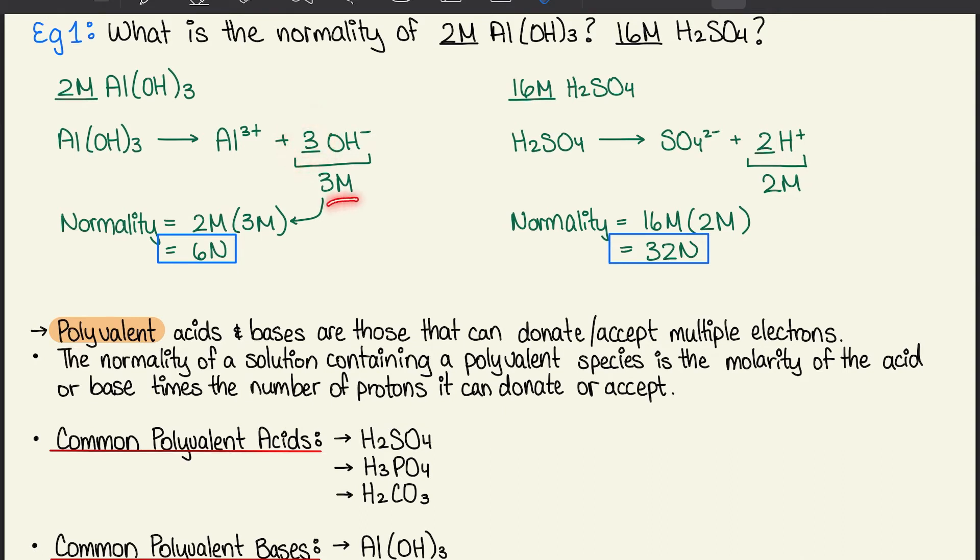Normality equals 2 moles times the 3 moles, because that's the amount of hydroxide ions that we have. That gives us 6N, and that's our answer for the first half of the question.